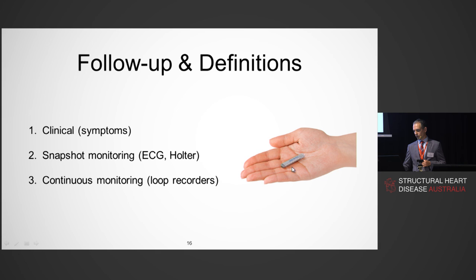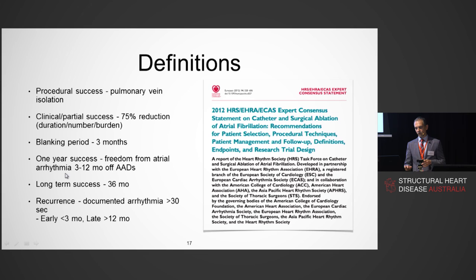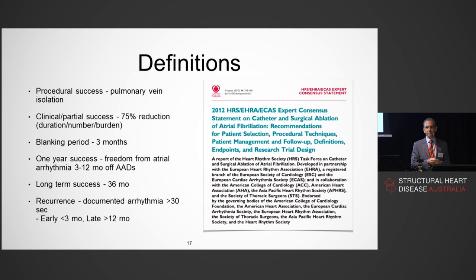Snapshot monitoring — a random ECG or 24-hour monitor — is of questionable benefit but necessary for strict follow-up or clinical trials. Continuous monitoring via loop recorders is also used. Procedural success means pulmonary vein isolation at the time; clinical success is a 75% reduction in AF burden. We ignore the first three months due to inflammation. One-year success is no AF off antiarrhythmic drugs between the three and twelve month mark, with recurrence defined as 30 seconds — though 30 seconds of AF on a random Holter is clinically meaningless and shouldn't define a failed ablation.